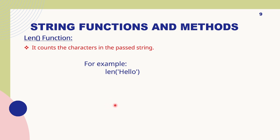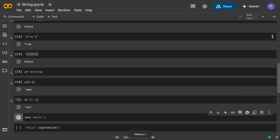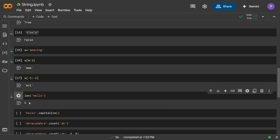Do check out that Telegram channel — it will be very beneficial. Now, the first function is the len function. It basically counts the number of characters present in the string. For example, len('hello') — if I run this program, since there are five characters, it will print 5, counting each and every character in the string.